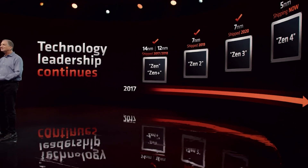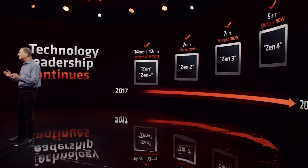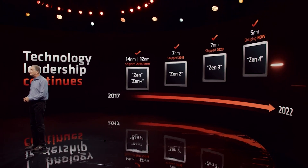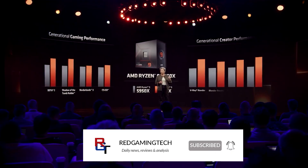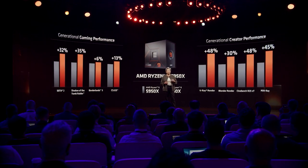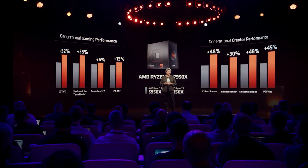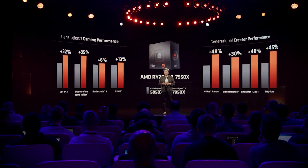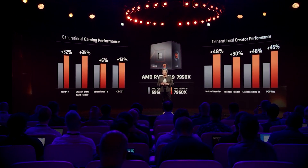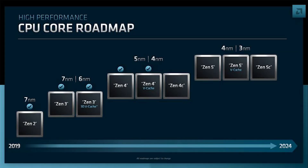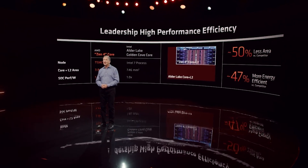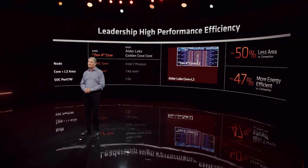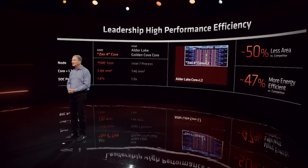Zen 5 rumors have reached fever pitch on the internet, and it's not really surprising given so many of the leaks concerning performance are just mind-blowing. We're looking at a massive performance uptick over Zen 4. But it's also not surprising that there are whispers about what comes next. Zen 5 is going to be very impressive, but Zen 6 is going to be impressive for a completely different reason — it's going to profoundly change the way we view processors, particularly the desktop lineup from AMD.